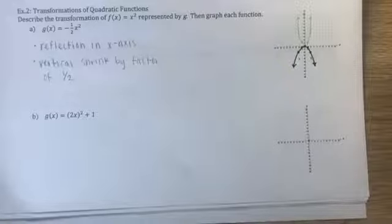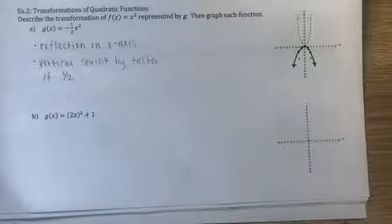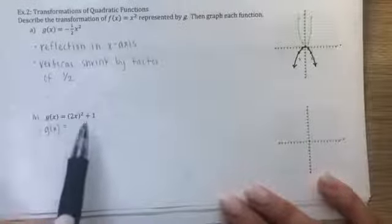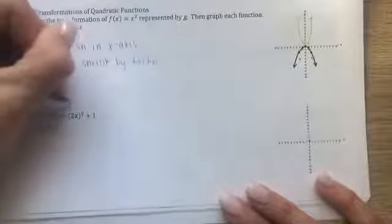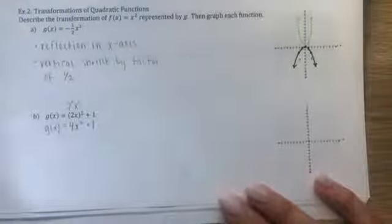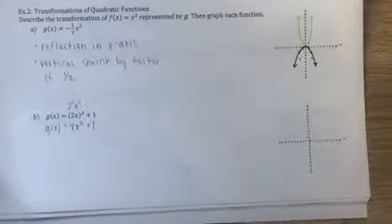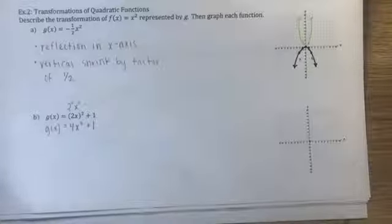Example 2b: g(x) = (2x)² + 1. This looks like a horizontal stretch, but it's easier to treat it as a vertical stretch. Simplify: (2x)² = 4x², so g(x) = 4x² + 1. Now approach it as a vertical stretch by a factor of 4, followed by a translation up 1. Remember order of operations — stretch first, then translate.